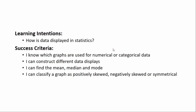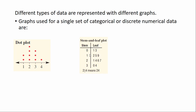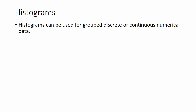Let's start off with a quick recap of the different graphs used in stats and which type of data they're used for. We're going to start with a single set of categorical or discrete numerical data. The graphs used for this type of data are a dot plot, stem and leaf plot, or a column graph. Keep in mind column graphs can also be called bar graphs.